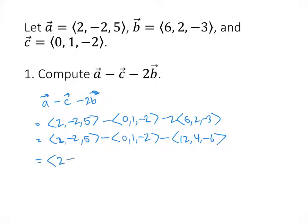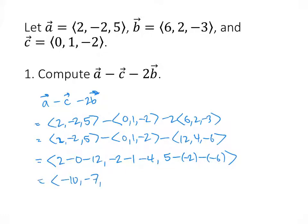Then we do the subtraction: (2 - 0 - 12), (-2 - 1 - 4), and (5 - (-2) - (-6)). Working that out, we get (-10, -7, 13). And that's it.